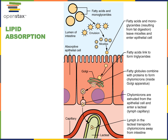Following chemical digestion of triglycerides, lipid-soluble nutrients like fatty acids and monoglycerides are absorbed across the apical surface of enterocytes by simple diffusion. Once inside the enterocyte, fatty acids and monoglycerides are joined back together forming triglycerides. These triglycerides are then packaged into lipoprotein particles called chylomicrons. The Golgi apparatus packages lipid-soluble nutrients into chylomicrons, which are then transported through a secretory vesicle and excreted by exocytosis at the basolateral surface of the enterocyte.